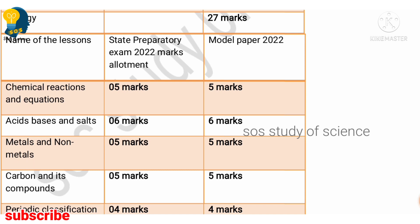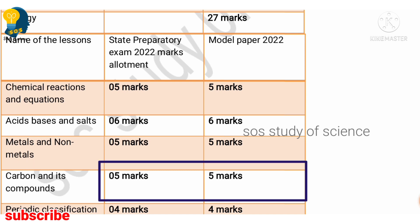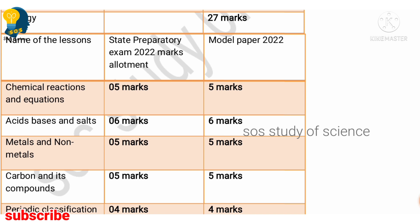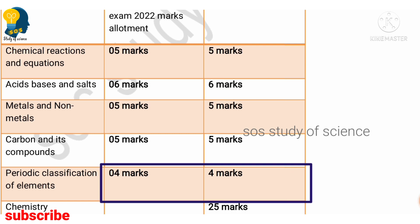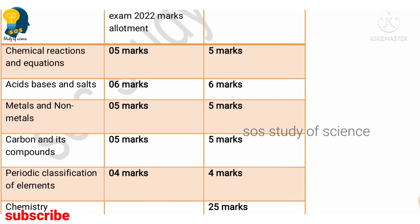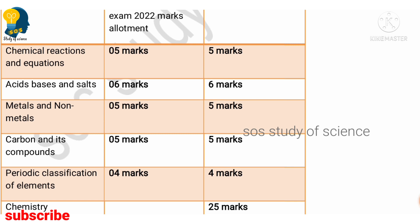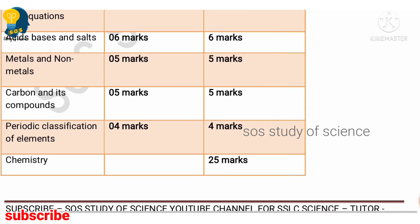Moving to Carbon and Its Compounds — five marks in the model paper and five marks in the preparatory paper as well, so there is no change. Next, Periodic Classification of Elements — four marks in the model paper and four marks in the preparatory paper, so there is no change. The same number of marks has been allotted in both the model paper and the preparatory papers for all chemistry lessons. By reading chemistry totally, you will get 25 marks. Now you can plan to get 25 marks easily by putting more effort into understanding the concepts.